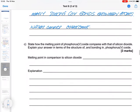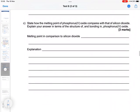Part C: State how the melting point of phosphorus 5 oxide compares with that of silicon dioxide. Explain your answer in terms of structure and bonding of phosphorus 5 oxide. So obviously, the melting point is going to be lower.